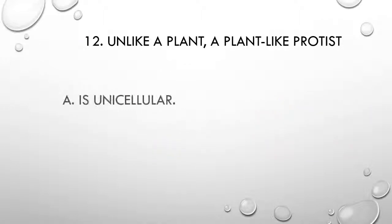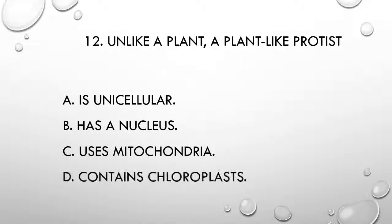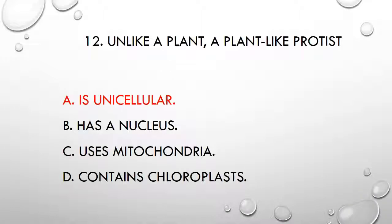Question 12. Unlike a plant, a plant-like protist: A) is unicellular, B) has a nucleus, C) uses mitochondria, D) contains chloroplasts. The correct answer is A, is unicellular.